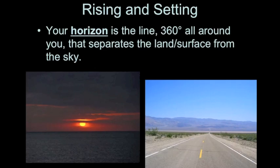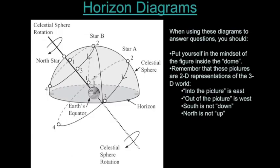In our horizon diagram, a person is standing in the northern hemisphere — north to the left, south to the right, east into the screen, west out of the screen. Star B has a path that is always completely above the horizon. Star A has a path that intersects the eastern and western horizons. If you were watching star A move across the sky, it rises from the eastern horizon, gets higher, reaches its highest point at position 2, then sets on the western horizon, spending some time below where you can't see it.